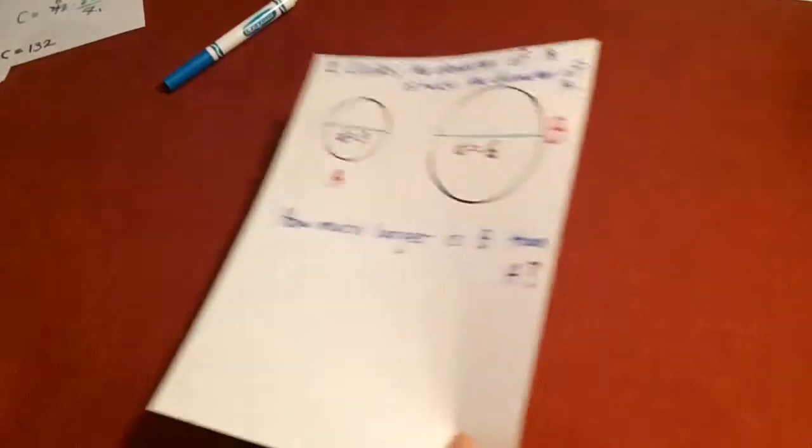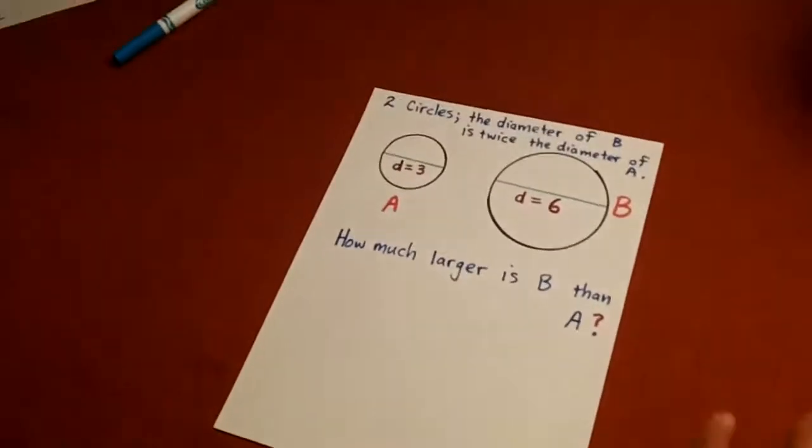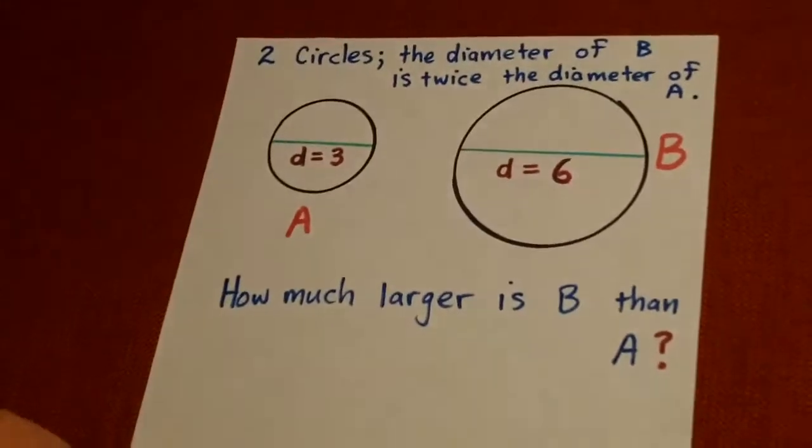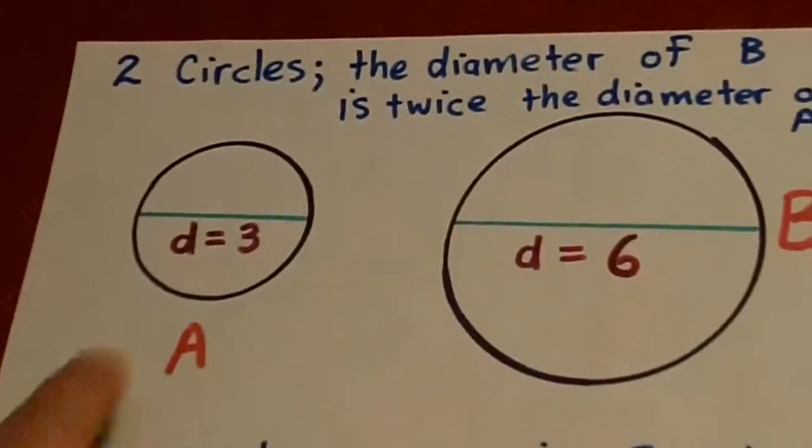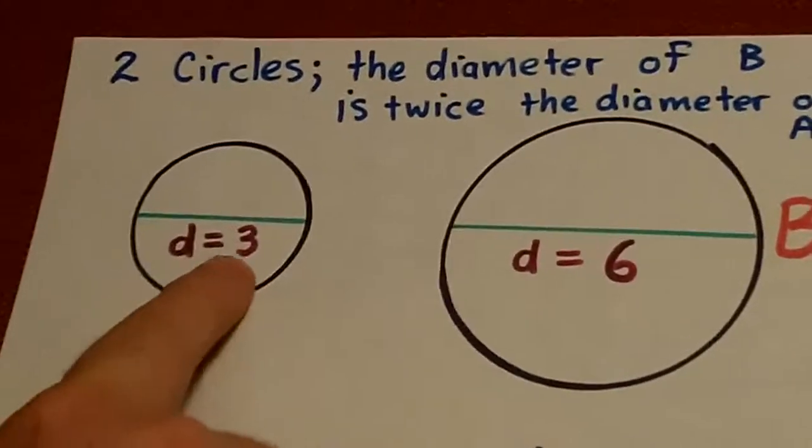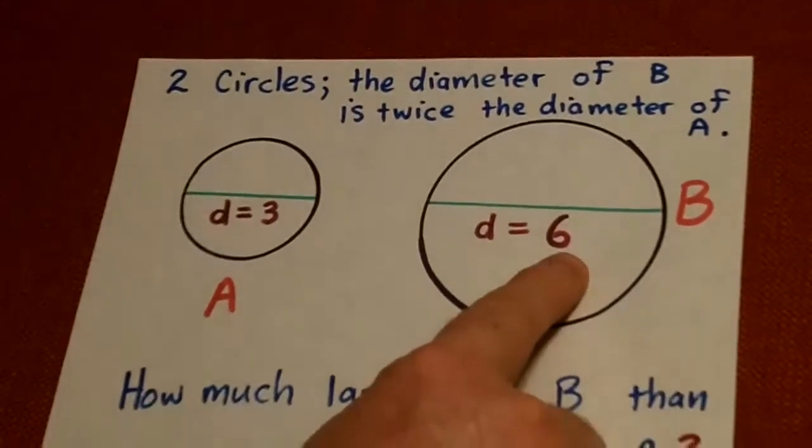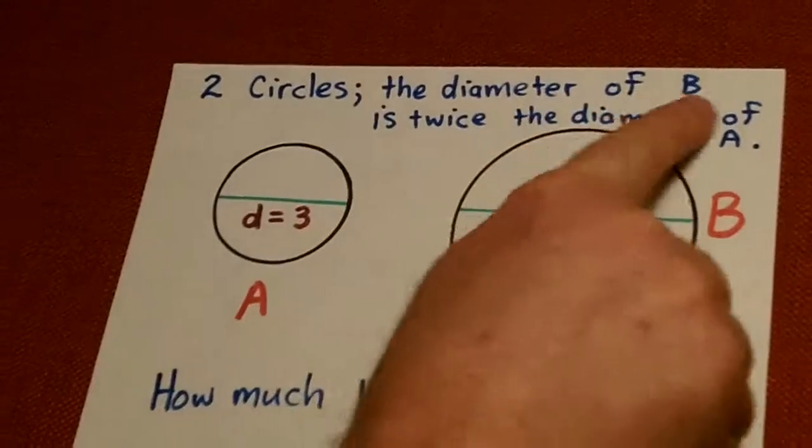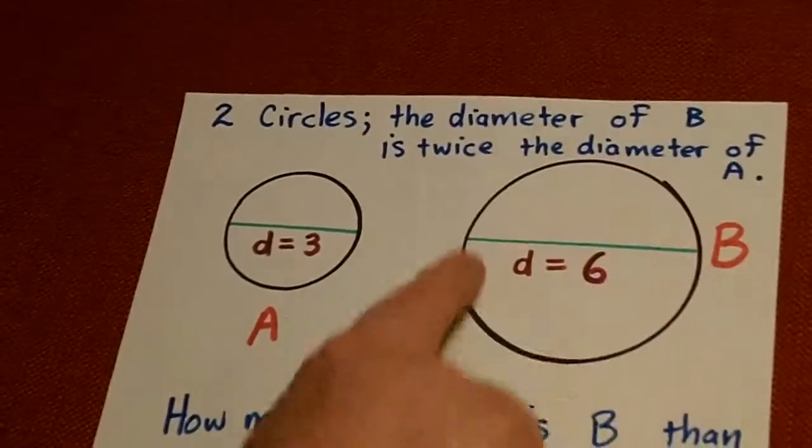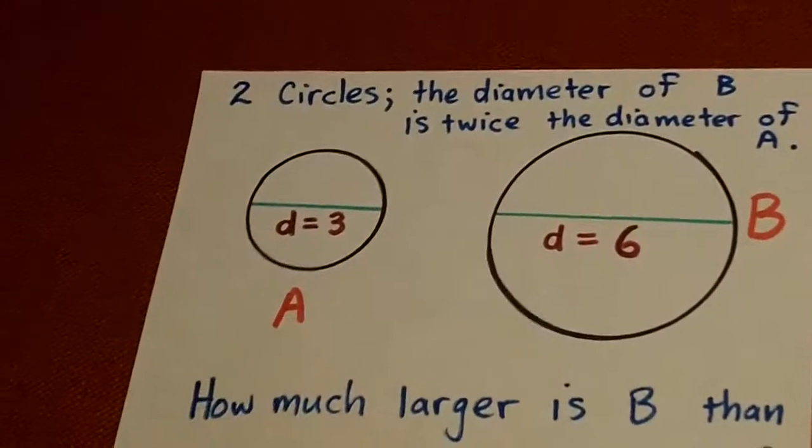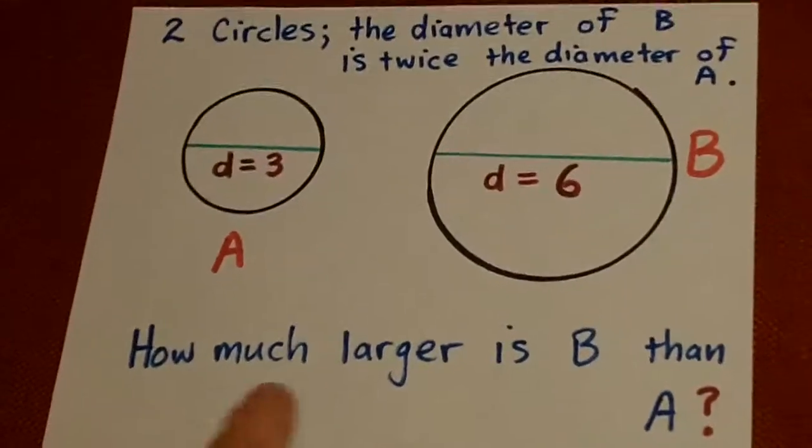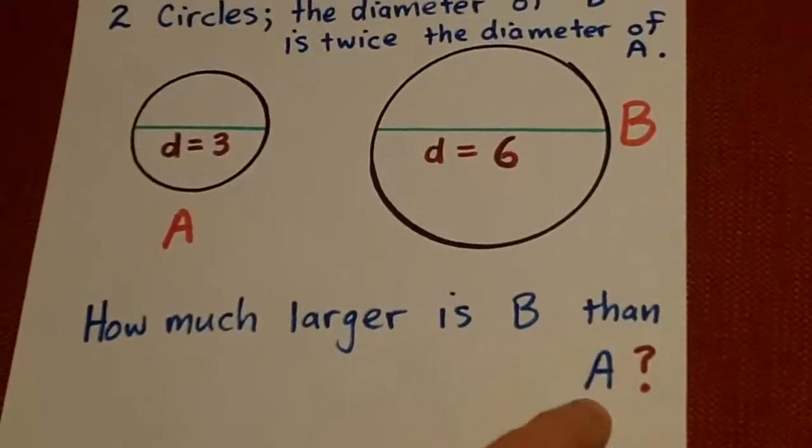And then our last tricky one here. Very typical of tricky ones on tests. They'll give you two circles. Diameter is 3. Diameter is 6. So, the diameter of B here, this is B circle. It's twice the diameter of A. And then they ask something like, how much larger is B than A?